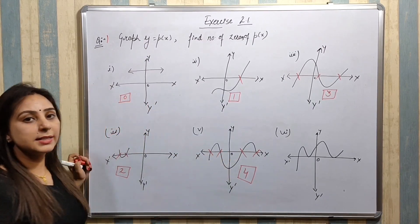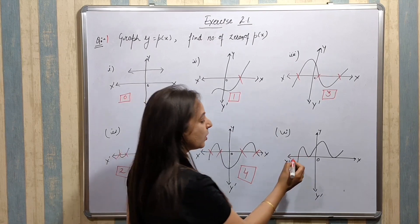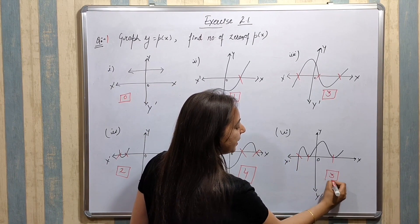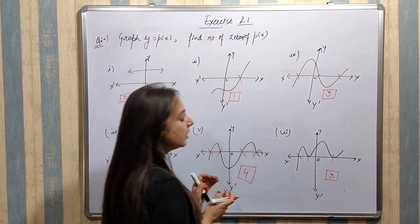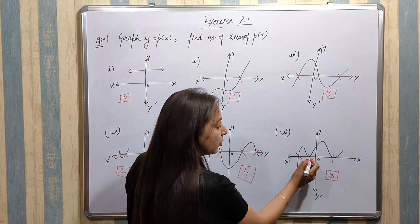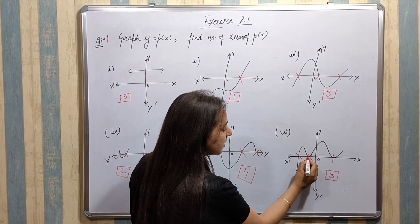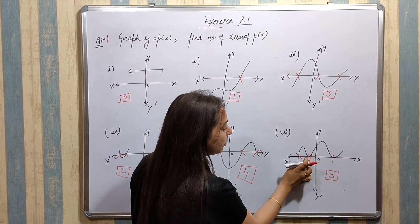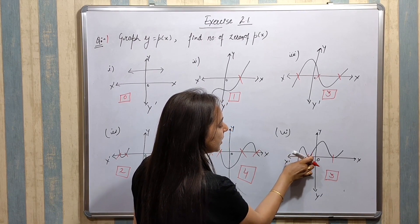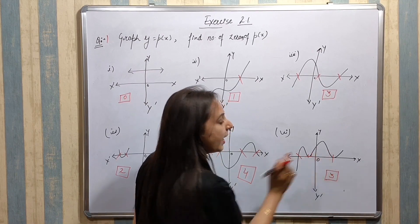Next dhekho, kitni time intersect hua hai? One, two and three. Kabhi kuch log galti kar lete hai ki is wale point ko bhi do count kar lete hai. Kyu? Yeh do nahi hoga, yeh single time me intersect hua hai. Agar graph upar jata, suppose aise jata, tab hota do bar, right? Toh yeh single time me intersect hua hai. Toh isko count karenge single time me. Toh one, two and three.